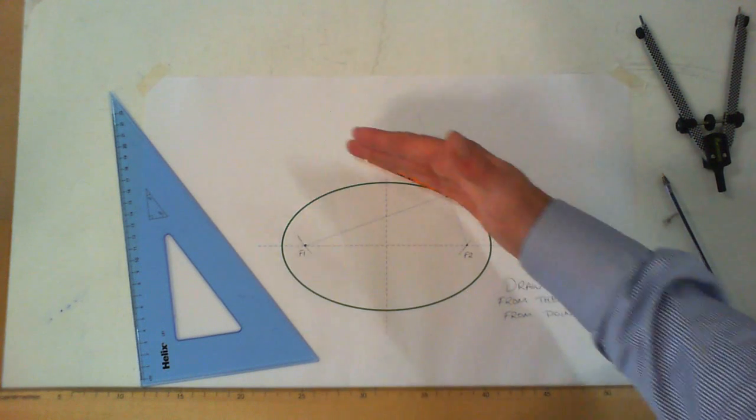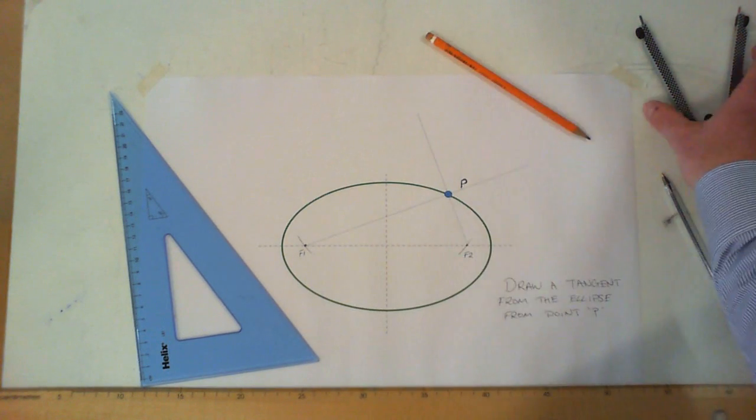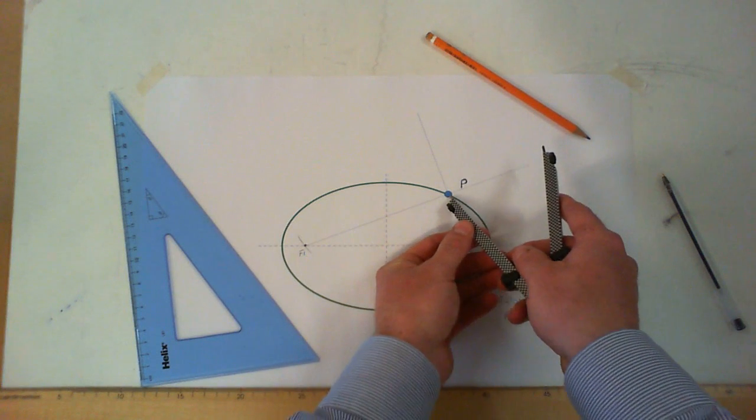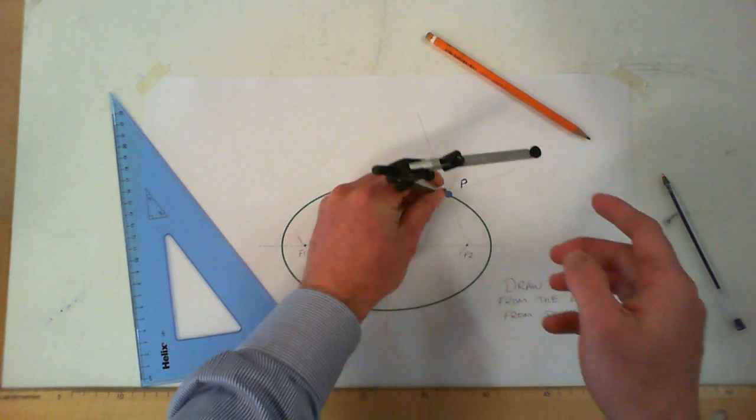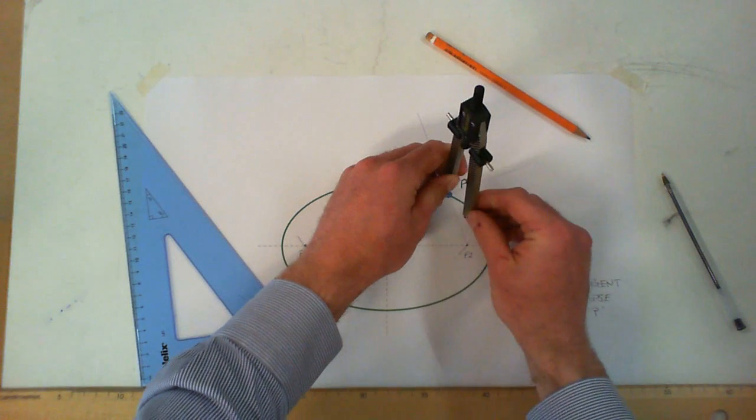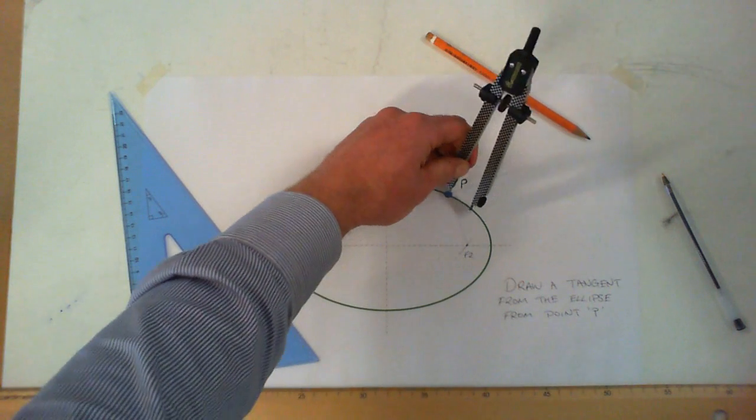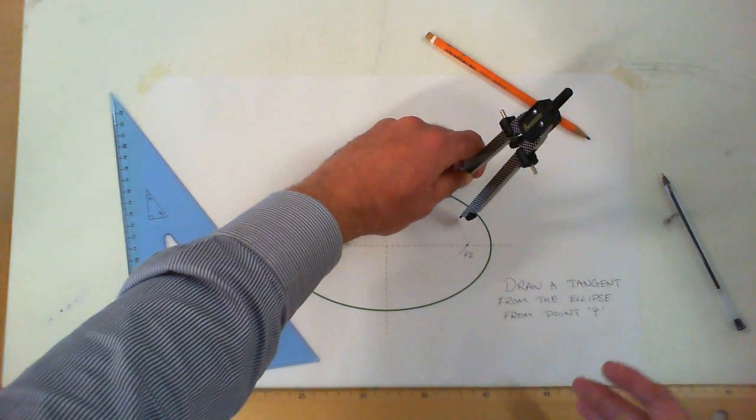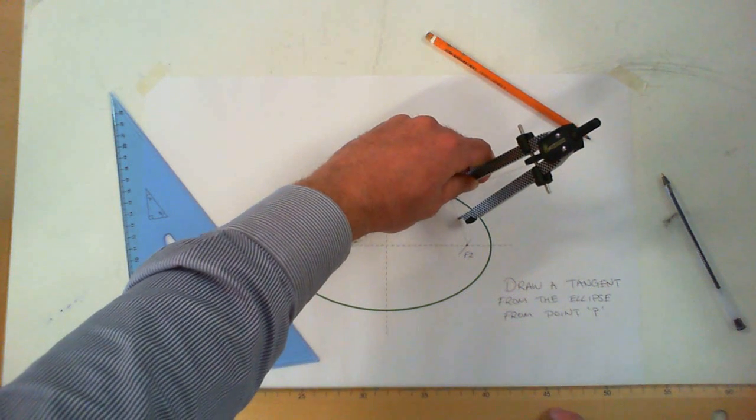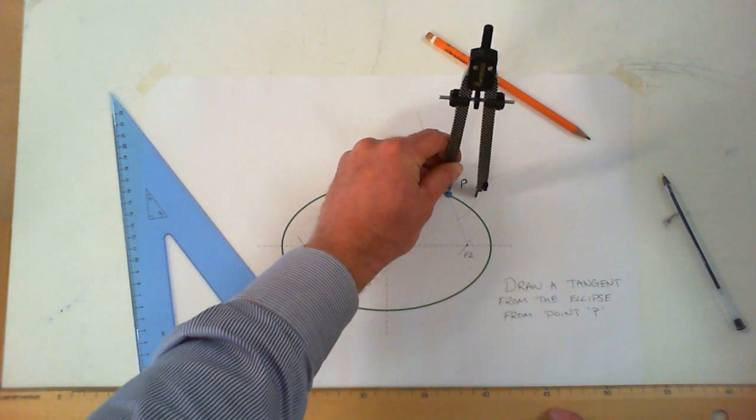I'll just bisect the bottom section here. I'm going to put my compass on point P, stretch it out to a reasonable distance—remember, bisecting an angle can be any distance, but just a reasonable 20 millimeters or so—and strike an arc between those two lines.